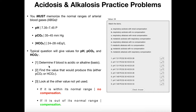The first thing we need to do is determine if the blood is acidic or alkaline — alkaline being another term for basic. Acidic is a lower pH, and alkaline is a higher pH. We just look at the pH we're given and figure out if it's below the lower limit or above the upper limit. If it's below 7.35, it's acidic; if it's above 7.45, it's alkaline. We just write that down.